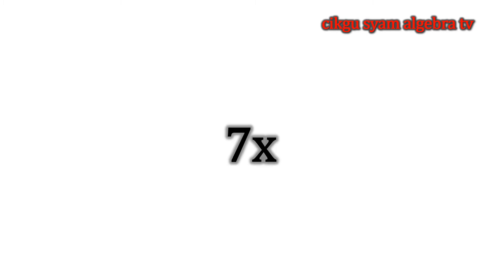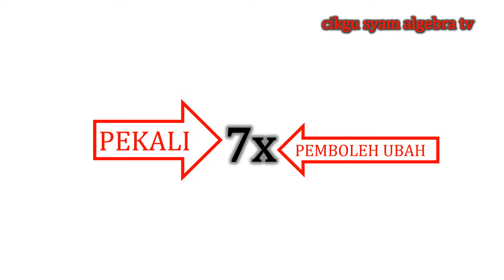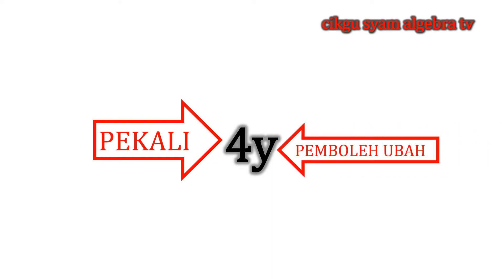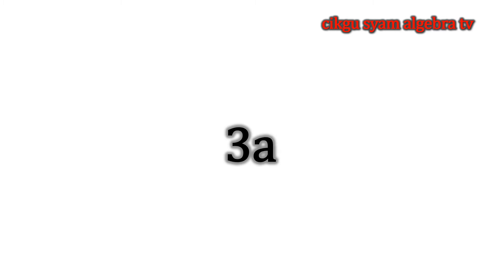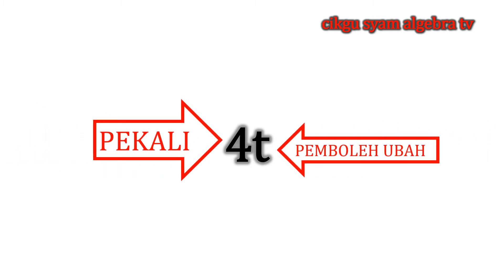Sebutan algebra adalah hasil darab nombor atau nilai-nilai yang didarabkan dengan pembeli ubah, ataupun satu pembeli ubah. Contoh: 7X, perkalinya adalah 7 dan pembeli ubahnya adalah X. Itu juga dengan 4Y — 4 kali Y adalah pembeli ubah. 3A, perkalinya 3, pembeli ubahnya A. 4T, perkalinya 4, T adalah pembeli ubah.